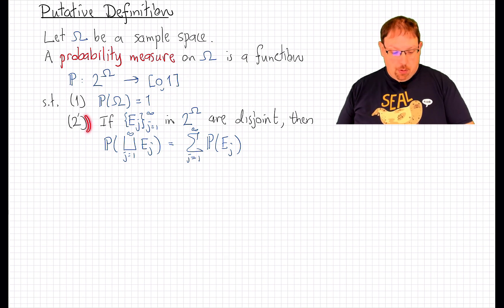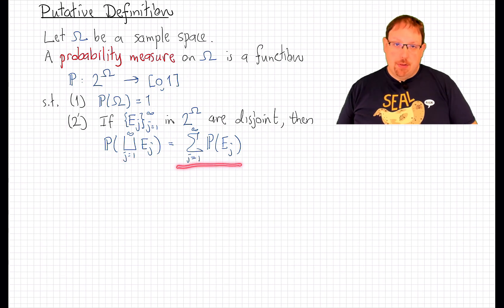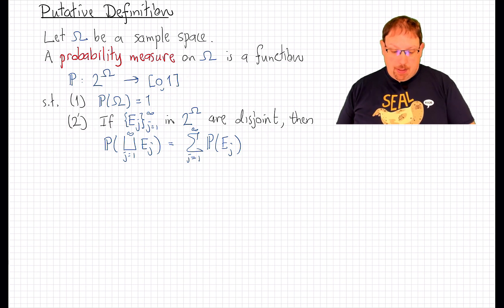And 2, or 2' to be consistent with the notation we used in the previous video. 2, if I have a countably infinite sequence of mutually disjoint events, then the probability of their union is the sum of the probabilities. That is our putative definition of a probability measure.